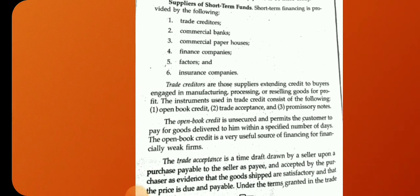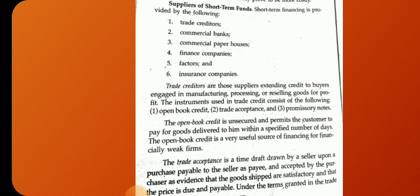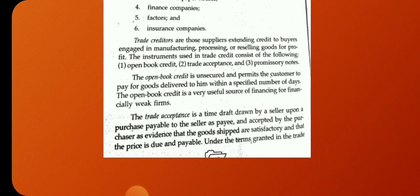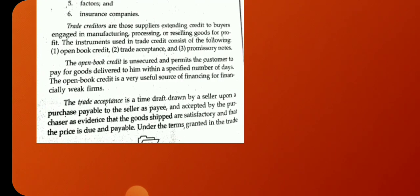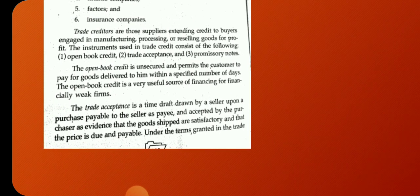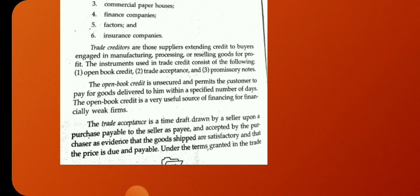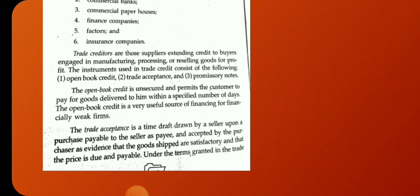The instruments used in trade credit consist of the following: open book credit, trade acceptance, and promissory note. Open book credit is a commercial arrangement that permits customers to pay for goods delivered within a specified number of days — it is a very useful source of financing for daily operations. Trade acceptance is a time draft drawn by the seller upon the purchaser, payable to the seller, and accepted by the purchaser as evidence that goods shipped are satisfactory and that the price is due and payable under the terms granted.